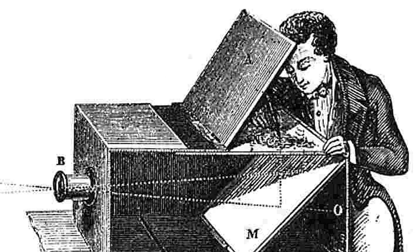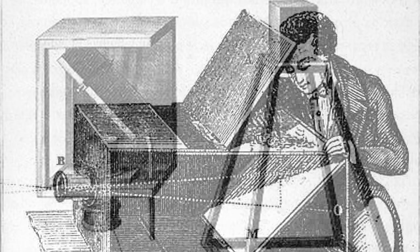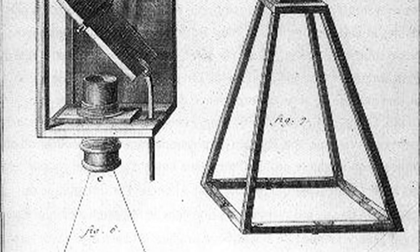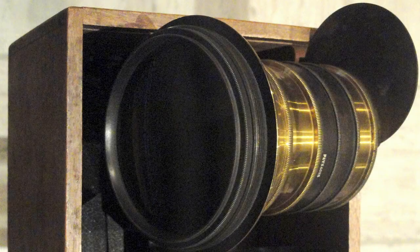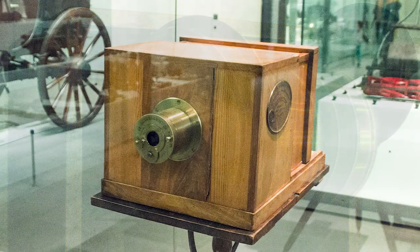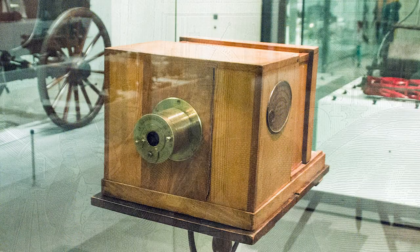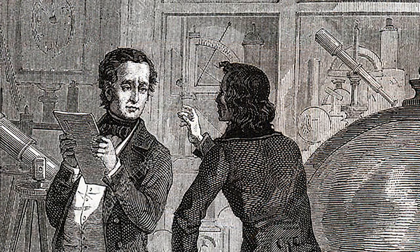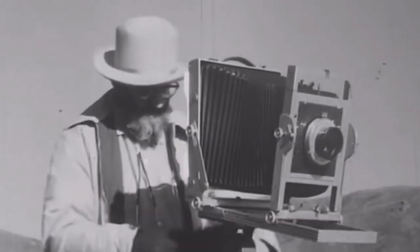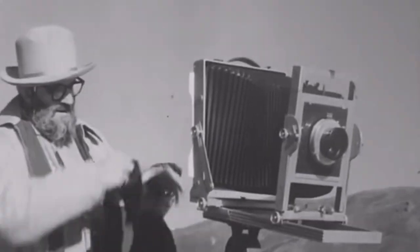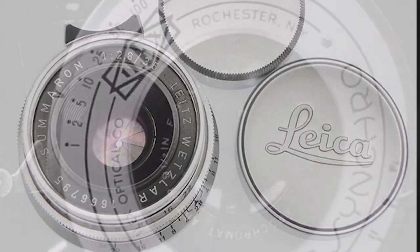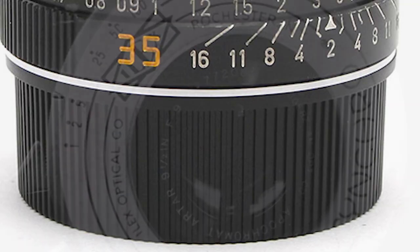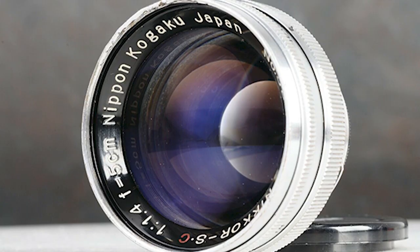The first lenses were used by artists as early as the 13th century, placing them on a camera obscura. The very first camera lens was invented by the maker of the first camera, Charles Chevalier. Between the 1830s and the 1930s, lenses steadily grew more complex and new and better ones appeared.